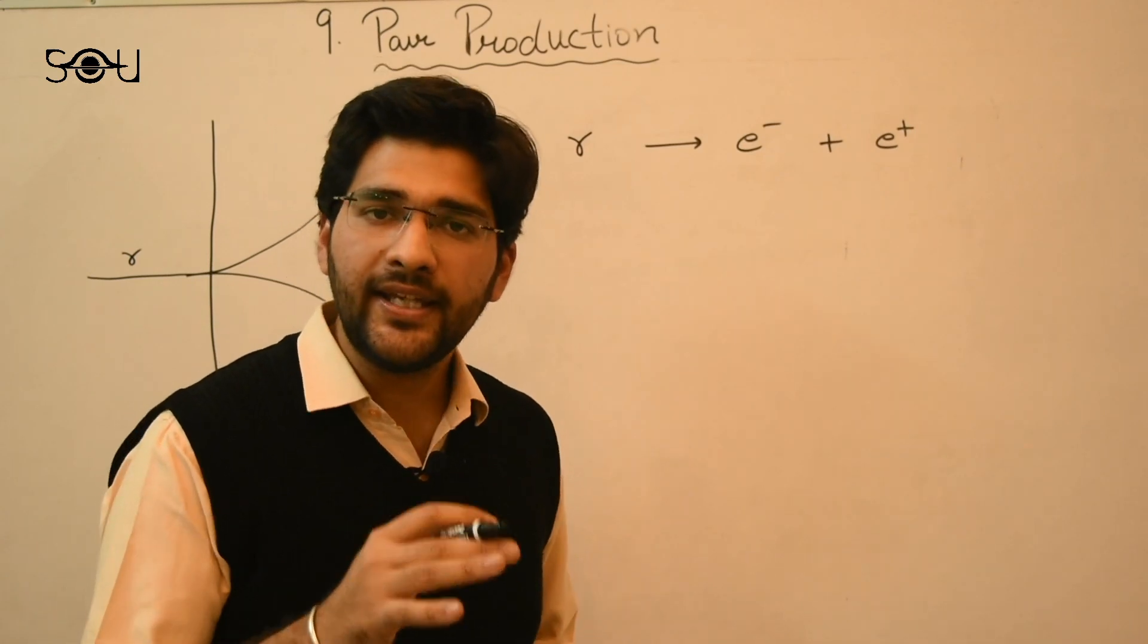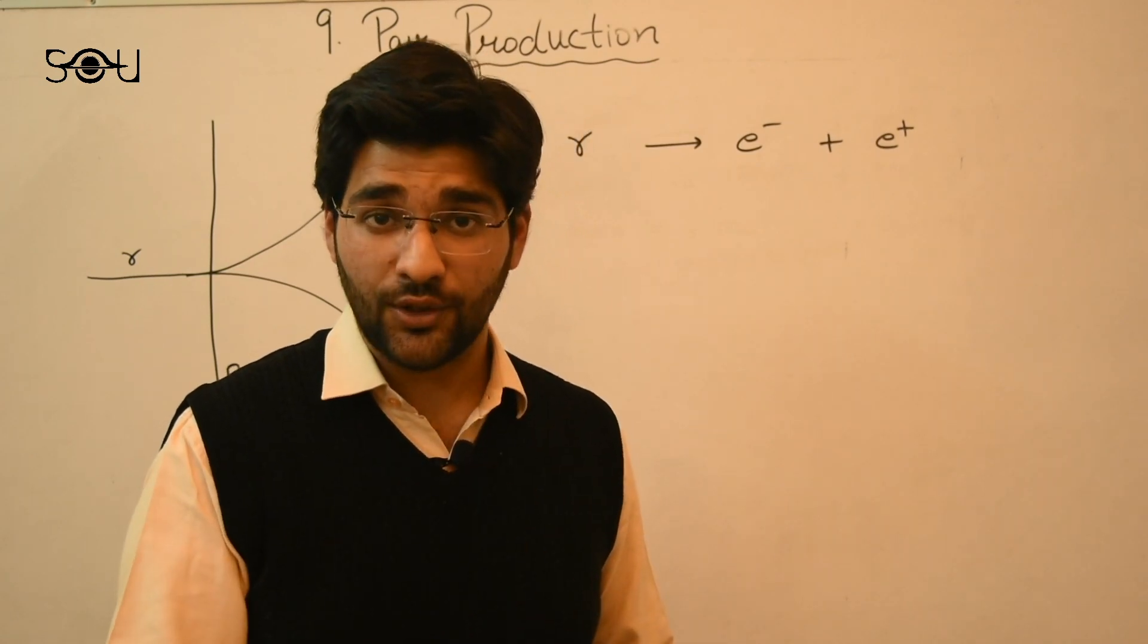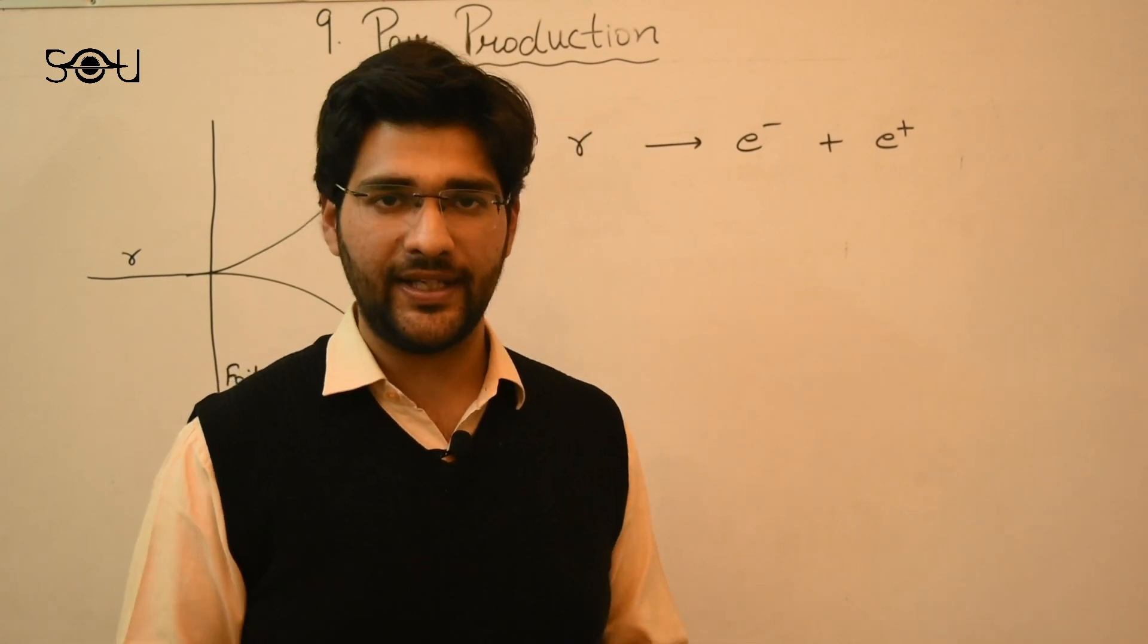The total energy of the particles before and after the interaction must be the same. Using Einstein's E equal to mc square, we can easily calculate the minimum energy that is required for the process or the phenomena of pair production to take place.